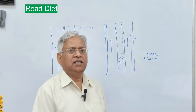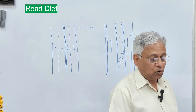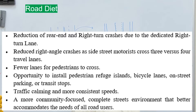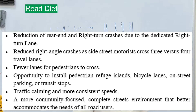Traffic managers have indicated several benefits of the road diet concept. These include: reduction of rear-end and right-turn crashes due to the dedicated right turn lane; reduced right-angle crashes as side-street motorists cross three versus four travel lanes; fewer lanes for pedestrians to cross; opportunity to install pedestrian refuge islands, bicycle lanes, on-street parking, or transit stops; traffic calming and more consistent speeds.